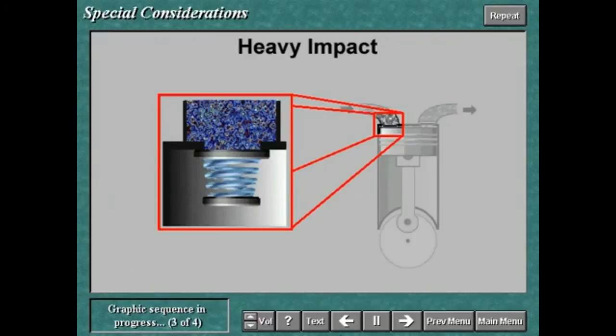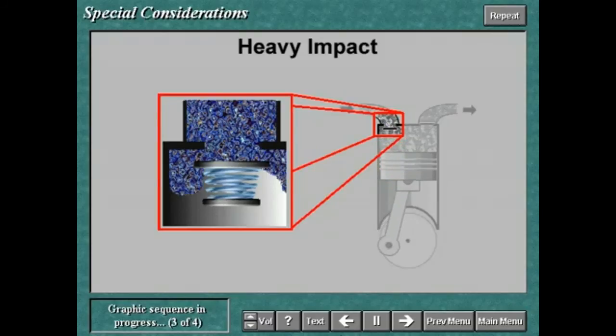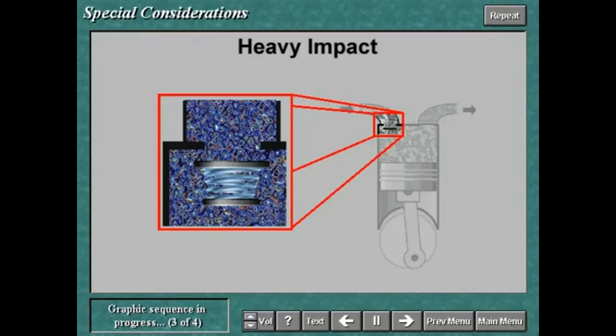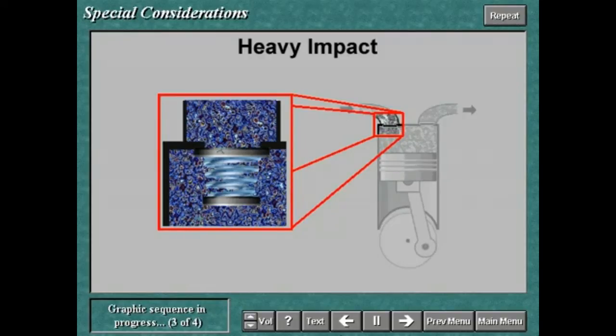If the valve remains open after the dead end of the stroke, closure will happen under both spring force and gas force due to backflow of the gas. The combined effect will result in a heavy impact and likely ring damage.